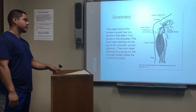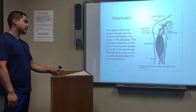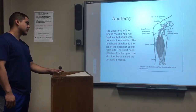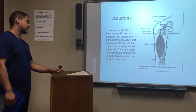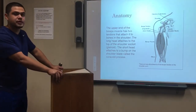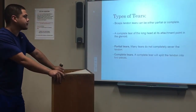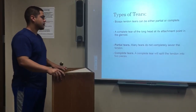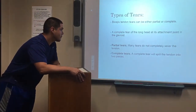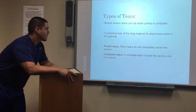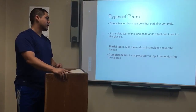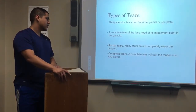My name is Jose Flores and I'm presenting on the bicep tendon tear at the shoulder. The upper end of the bicep muscle has two tendons that attach it to the bones in the shoulder. The long head attaches to the top of the shoulder socket, the glenoid. The short head attaches to the bump on the shoulder blade called the coracoid process.